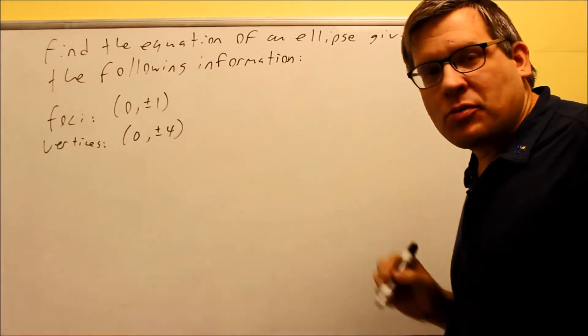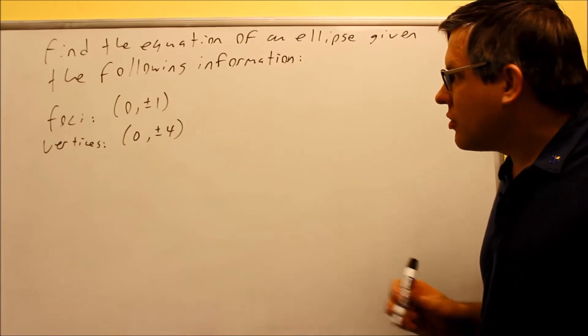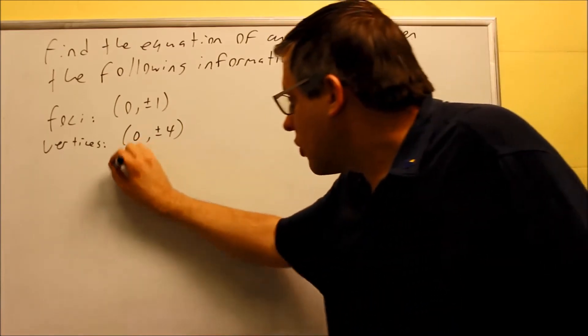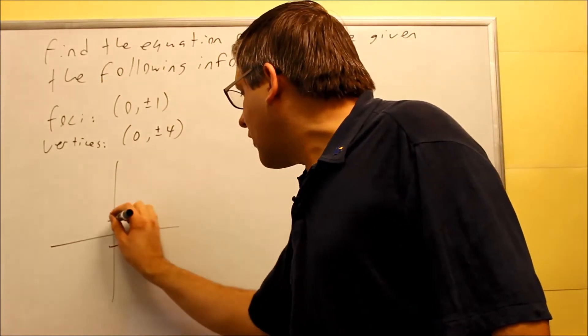So the best thing to do with problems like this would be to plot the information that's provided. So I'm going to plot this over here. I have foci (0, ±1), so I have that.